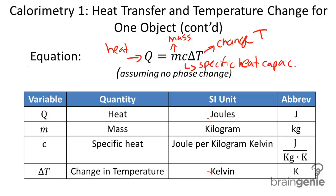Let's go over some of the variables. Q is for heat, and the units are joules. M is mass, and that's in kilograms. C is for specific heat, and the units are joules per kilogram Kelvin.